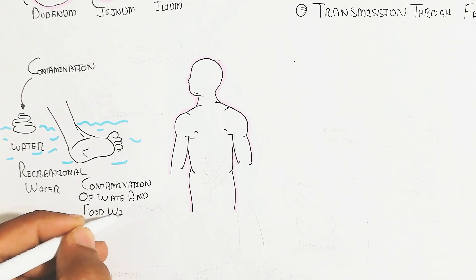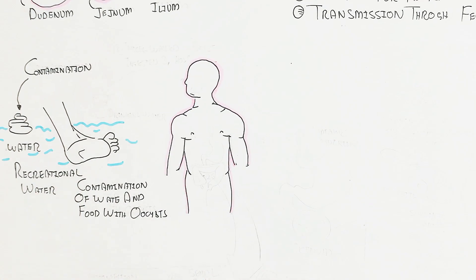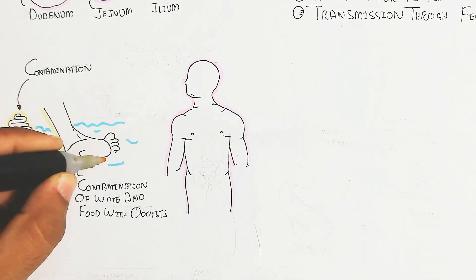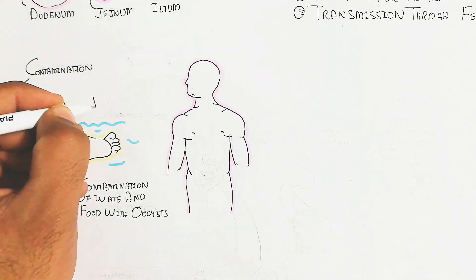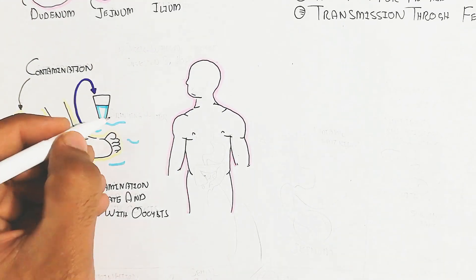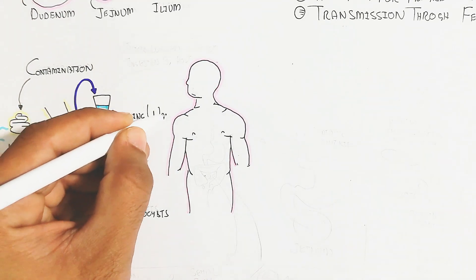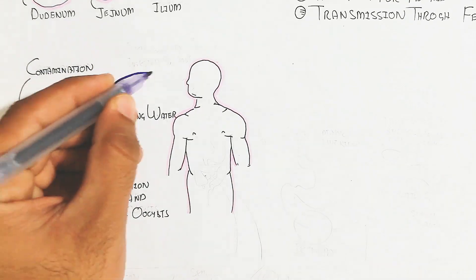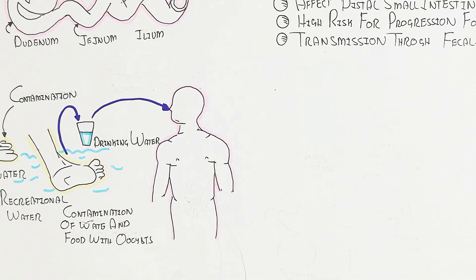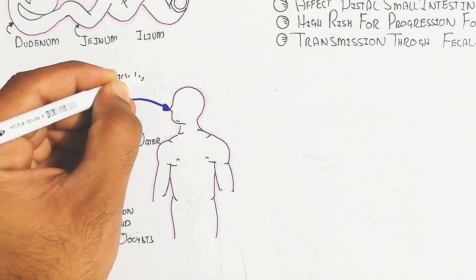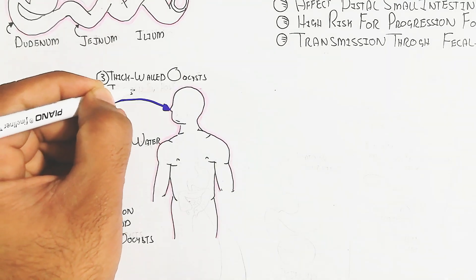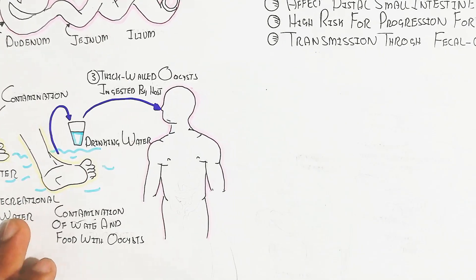Contaminated water, waste and food with oocyst can spread the infection. Whenever people drink the water, the thick-walled oocyst is ingested by the host. Whenever it is ingested into the host...